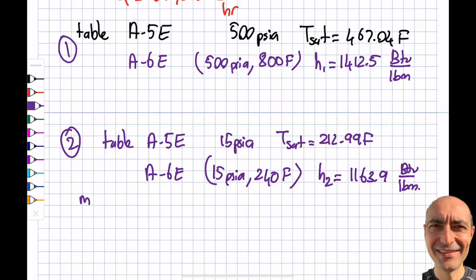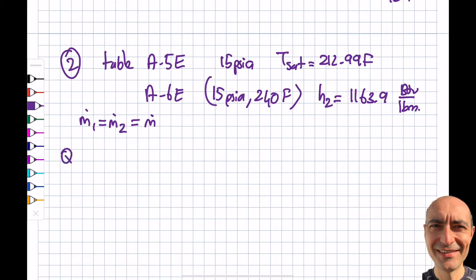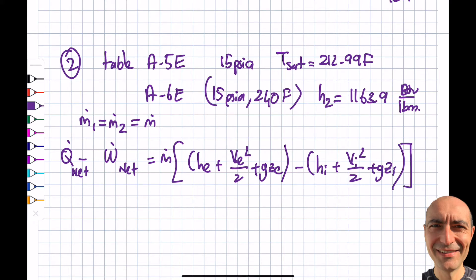I do the same thing in A-6E, this time at 15 psia, 240°F, and I was lucky the information was there, so I get my h2 is 1163.9 Btu/lbm. Then I write ṁ1 equals ṁ2, or rather inlet and exit equal ṁ. Then I'll write Q̇net - Ẇnet equals ṁ times [(he + Ve²/2 + gze) - (hi + Vi²/2 + gzi)]. As I mentioned before, the potential energy difference will not be there.